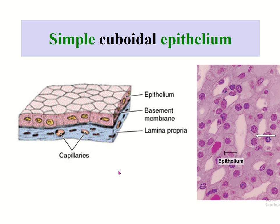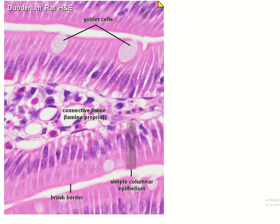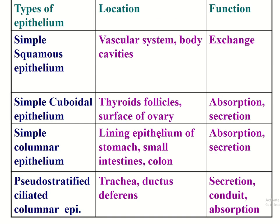Simple cuboidal epithelium: the height and breadth of the cell are equal, with a centrally placed round nucleus. Simple columnar epithelium: the height is more than the breadth, with an oval nucleus basally placed. These are the simple epithelial types, with their respective distributions and functions — including the simple columnar epithelium with goblet cells.